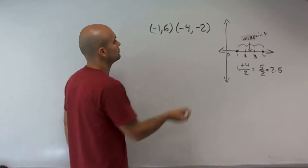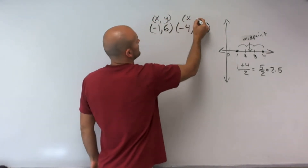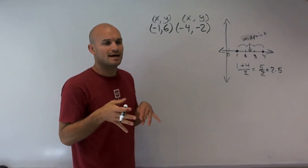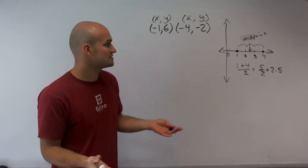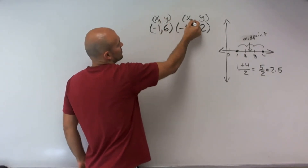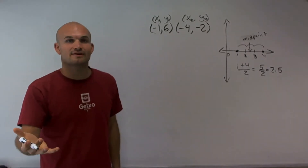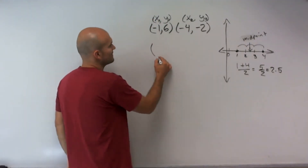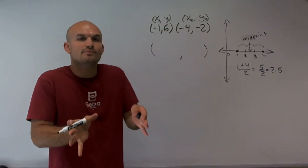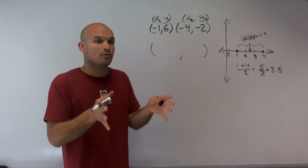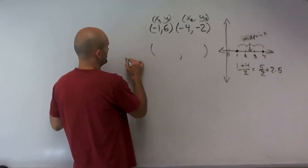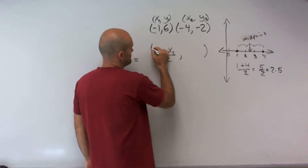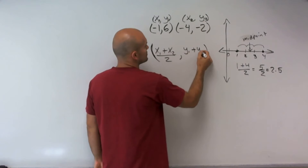For this problem we need to determine our x values and our y values. A coordinate point comes in x, y and x, y. We use subscripts to distinguish between x1 and y1 of each coordinate point. If I want to find the midpoint, the midpoint is itself a coordinate point — it's the point between the two given points. I need to find the average of the x values and the average of the y values. The formula looks like this: x1 plus x2 divided by 2, comma, y1 plus y2 divided by 2.